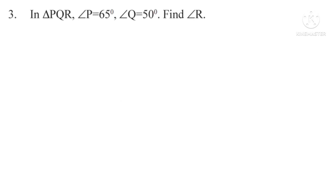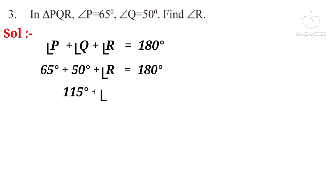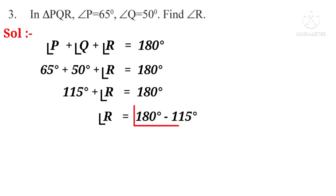Third problem: In triangle PQR, angle P = 65° and angle Q = 50°. Find angle R. Solution: Since the sum of angles in a triangle is 180°, angle P + angle Q + angle R = 180°. So 65° + 50° + angle R = 180°, giving 115° + angle R = 180°. Therefore, angle R = 180° − 115° = 65 degrees.